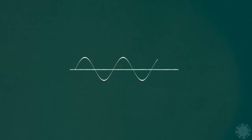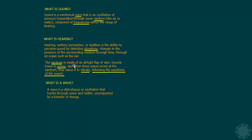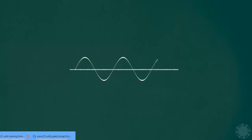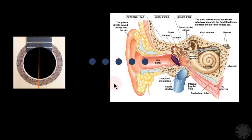Let's go back to our definition of sound from the last video. A wave is a disturbance or oscillation caused by vibration. These are the key points we need to understand. Going back to the illustration from the last video: sound is produced when you pluck a string and the string starts vibrating.